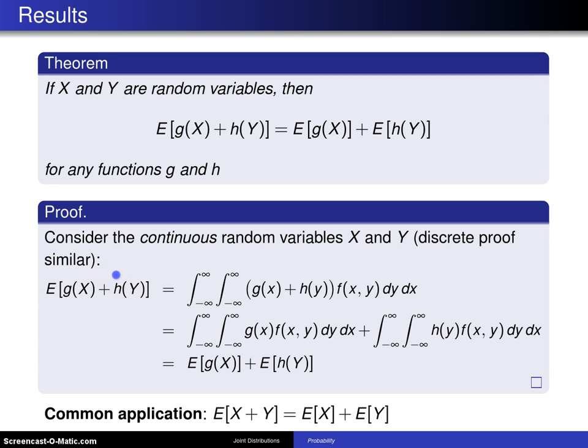The expected value of g of X plus h of Y, by the definition of the expected value, will be g of X plus h of Y multiplied by the joint probability density function f of X, Y dy dx over the support.